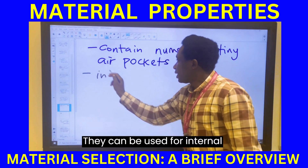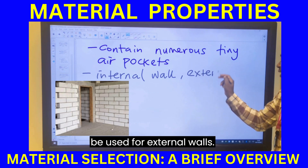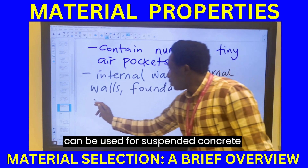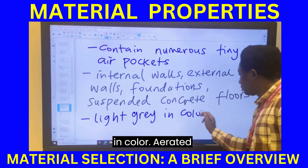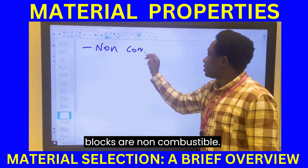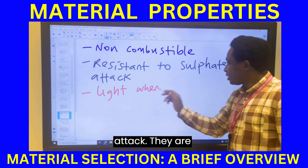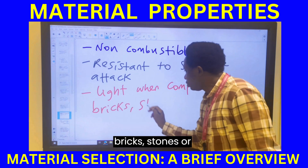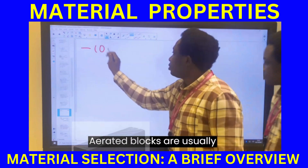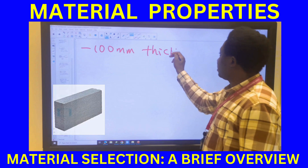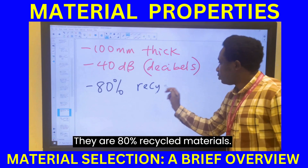Aerated blocks can be used for internal walls, internal wall partitioning, external walls, foundations, and suspended concrete floors. They are usually light gray in color. Aerated blocks are non-combustible, resistant to sulfate attack, and light in weight compared to bricks, stones, or dense concrete blocks. They are typically 100 millimeters thick with 40 decibels of sound insulation, and are 80 percent recycled materials.